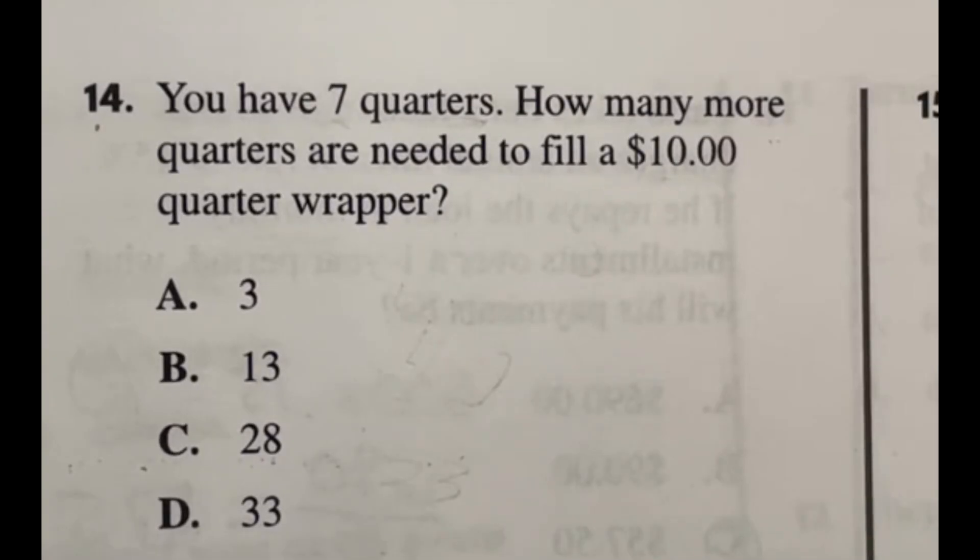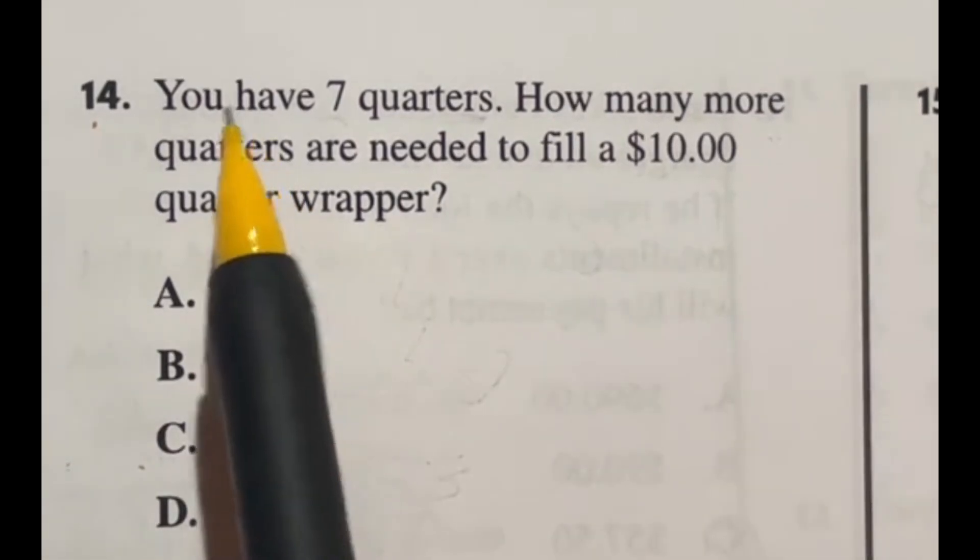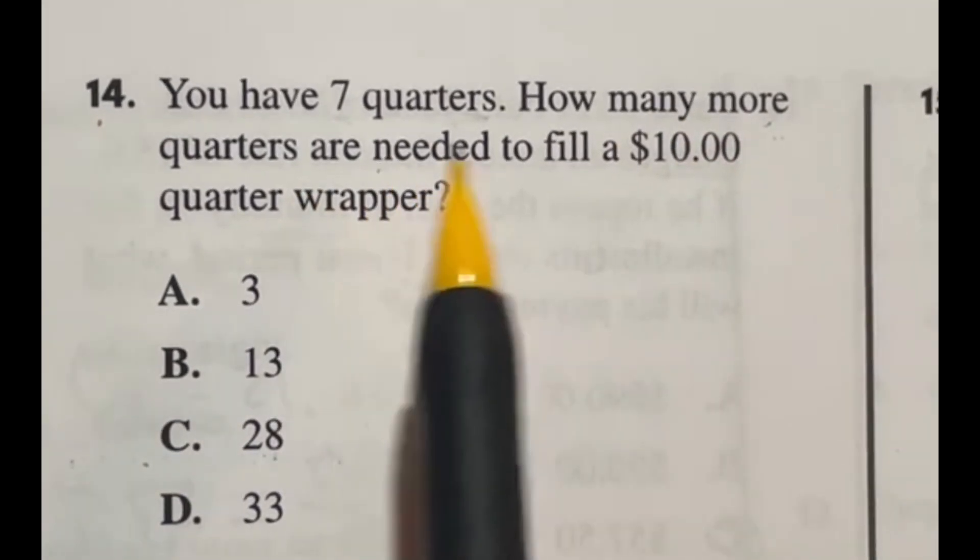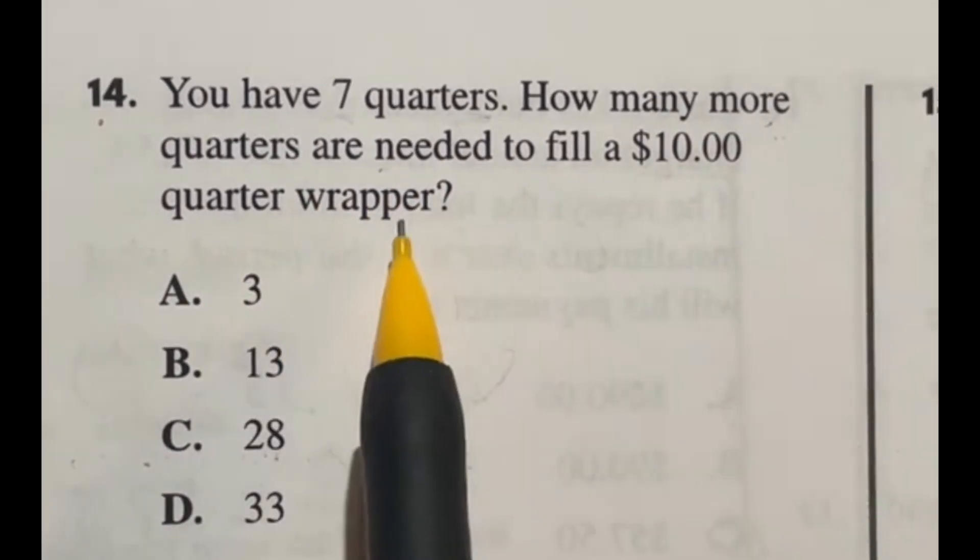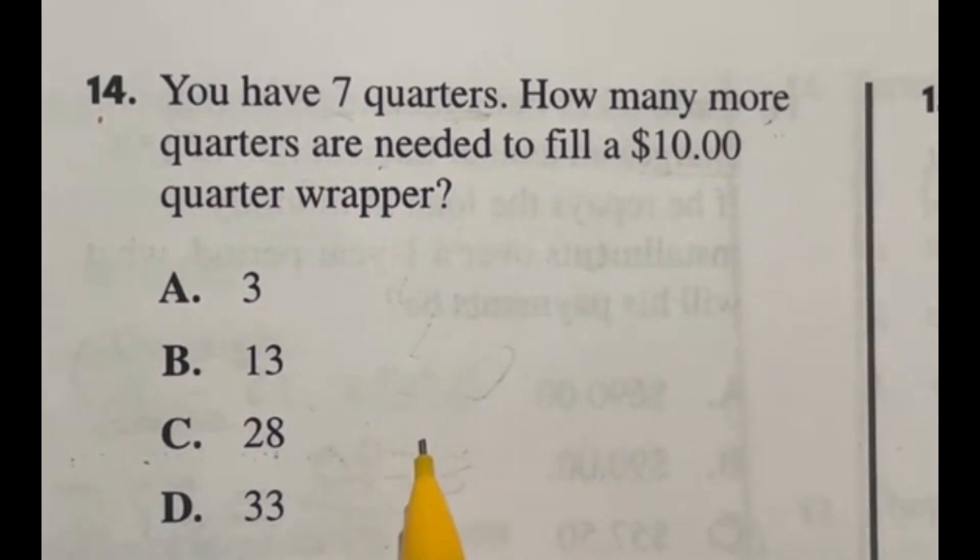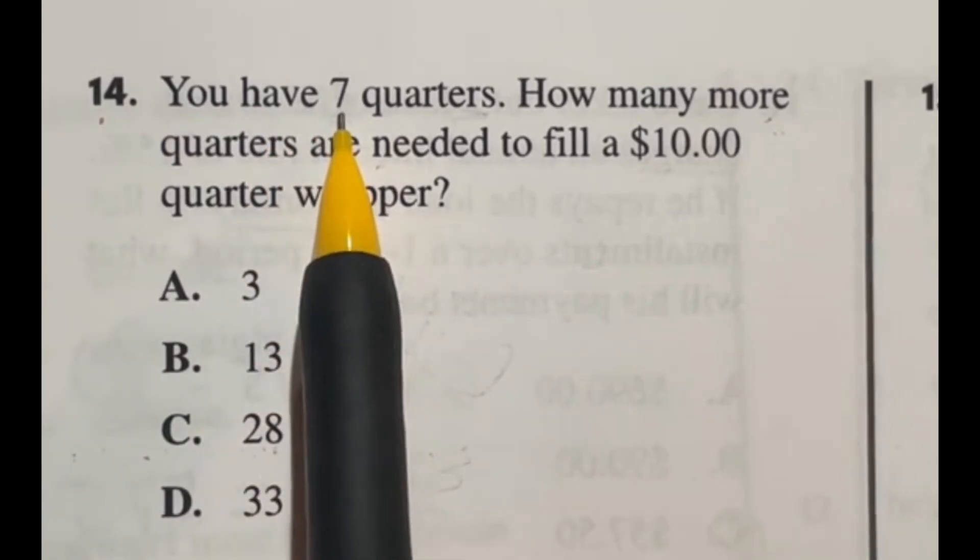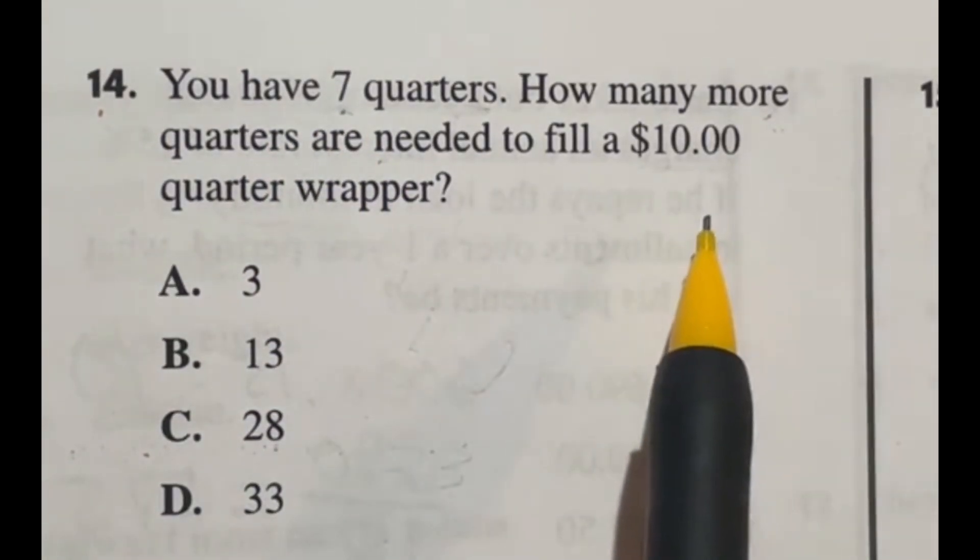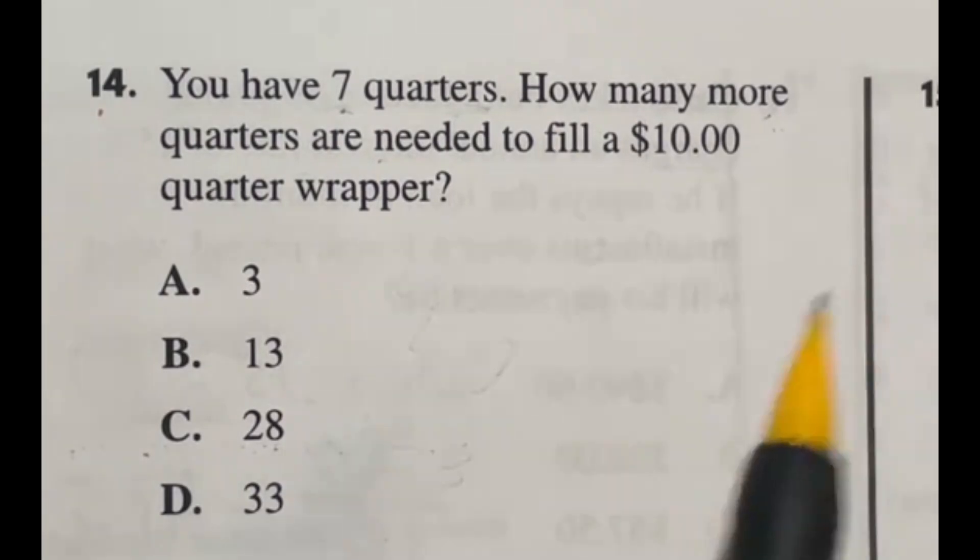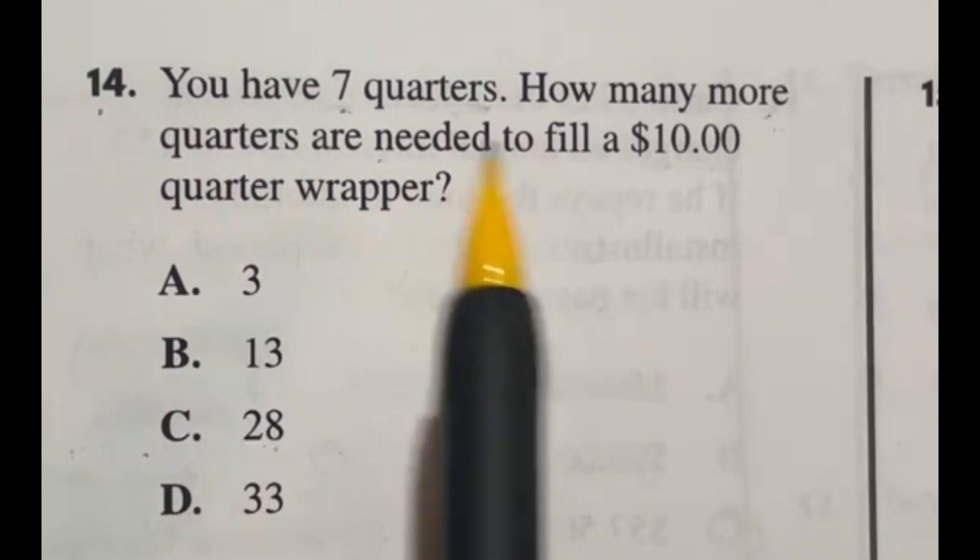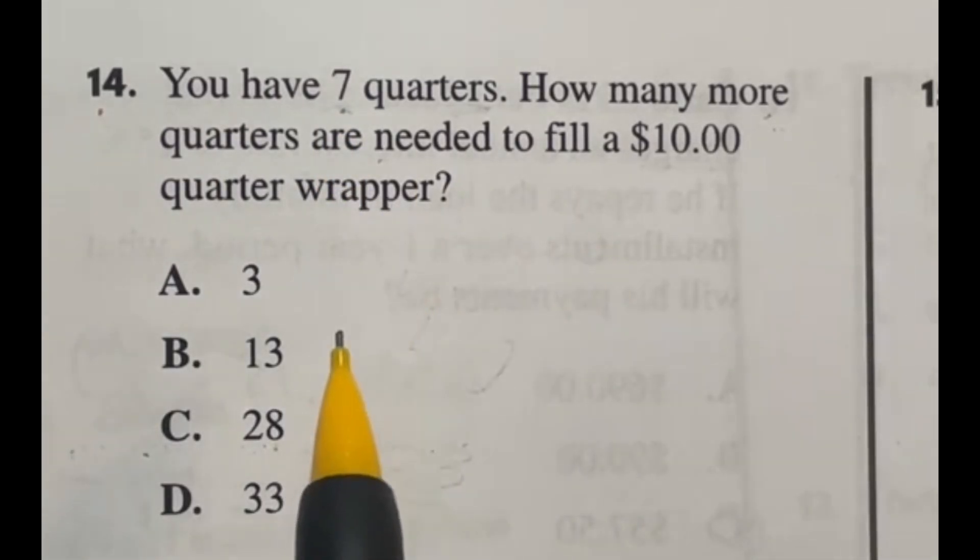For number 14 on the ASVAB military entrance exam it says you have seven quarters. How many more quarters are needed to fill a $10 quarter wrapper? Now you may think oh let's start diving right in. How much money is seven quarters and how much more money would I need? That's all doing too much work. Remember part of this test is all about speed so you need to find the quickest way to get to your answer.